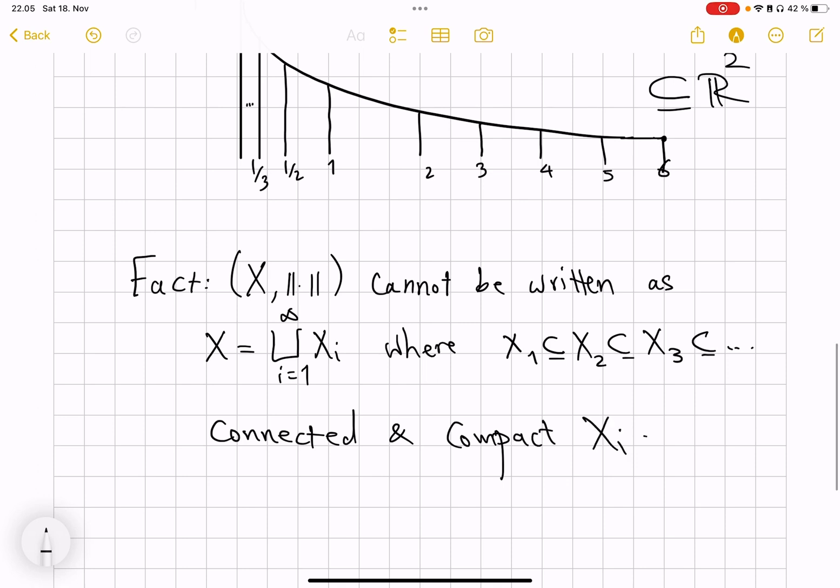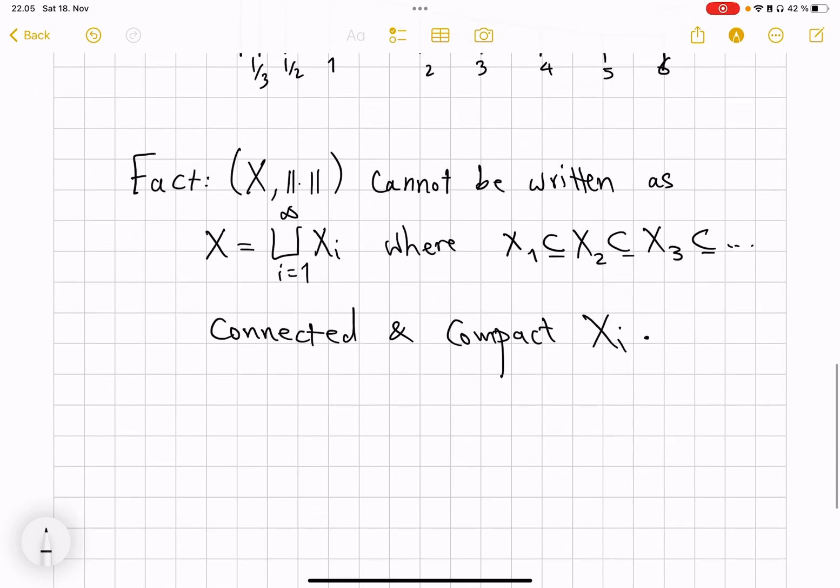So this space is closed, but obviously not compact. However, more is true that you cannot even write it as a chain, as an increasing chain of connected and compact sets. So what does this have to do with the proof of that theorem?